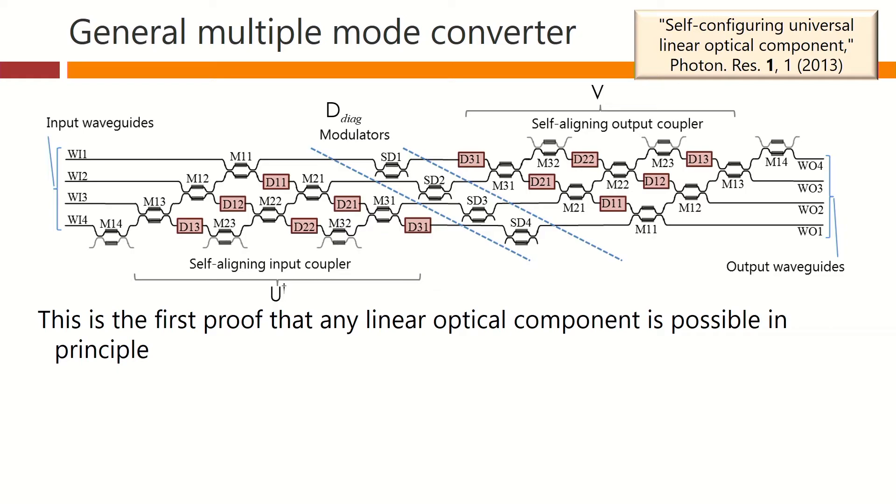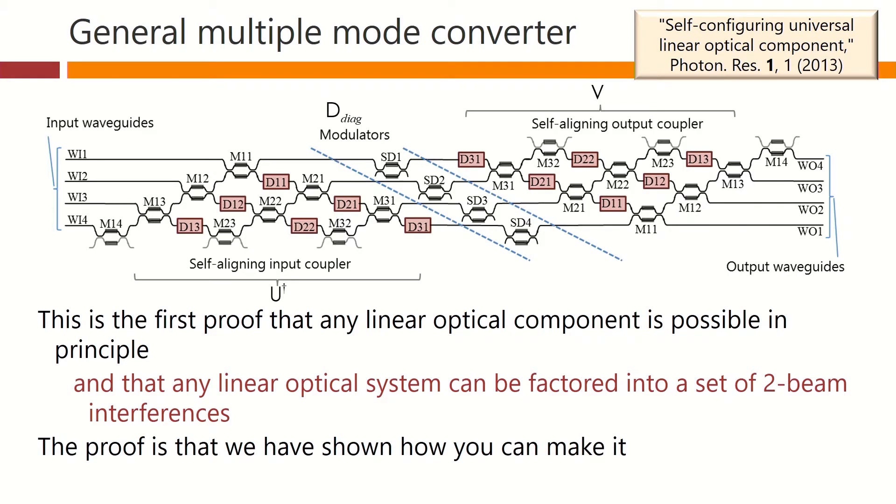This is the first proof that any linear optical component is possible in principle, and that any linear optical system can be factored into a set of two beam interferences. The proof here is that we've shown you how you can do it.